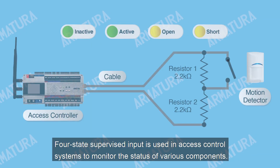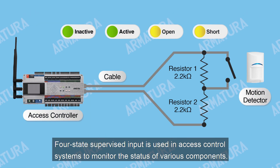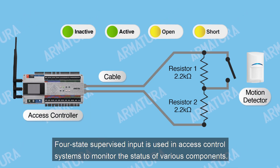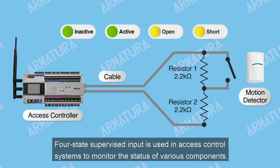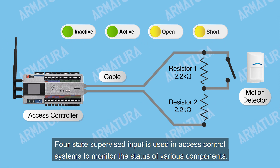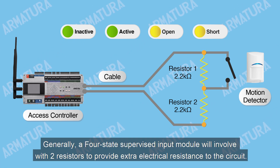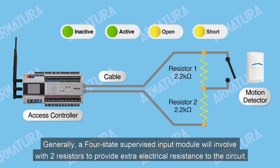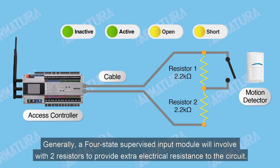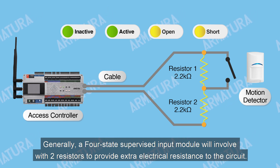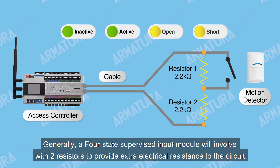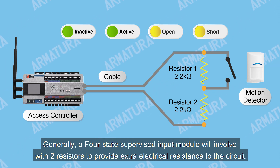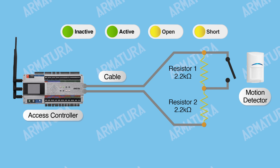Four-state supervised input is used in access control systems to monitor the status of various components. Generally, a four-state supervised input module will involve two resistors to provide extra electrical resistance to the circuit.